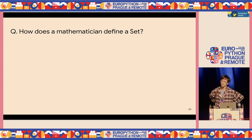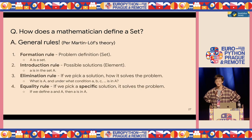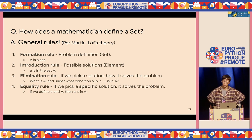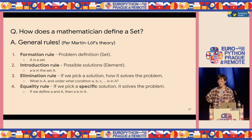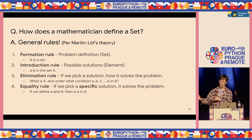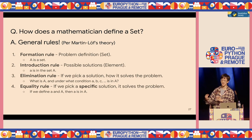Per Martin-Löf defines a set using what are called general rules — four rules used in computer science and mathematics. First is the formation rule: we can say A is a set. Second is the introduction rule: we define the elements inside the set — the solutions to the problem. Third is the elimination rule: if you pick a solution, that solution can solve the problem. Fourth is the equality rule: if you pick a specific solution, that specific solution solves the problem.